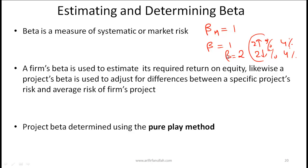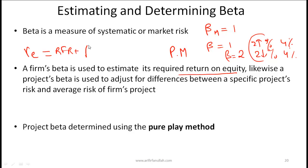We'll talk about beta and its interpretation in a lot more detail when we do portfolio management. A firm's beta is used to estimate its required return on equity. We can use CAPM: the required return on a given stock is equal to the risk-free rate plus beta times the market risk premium.